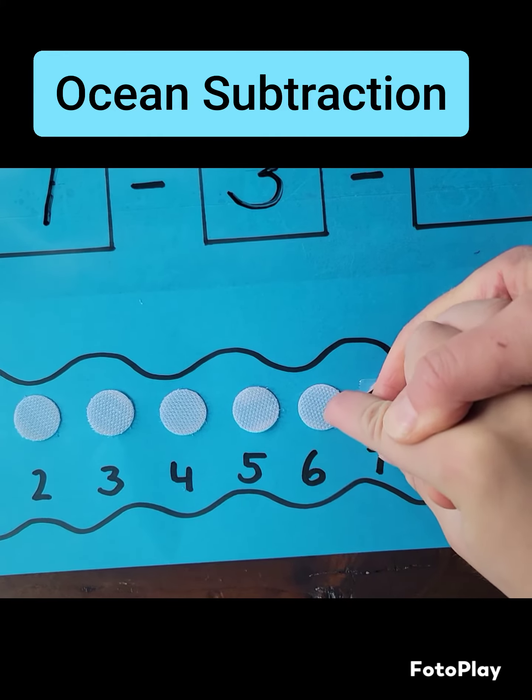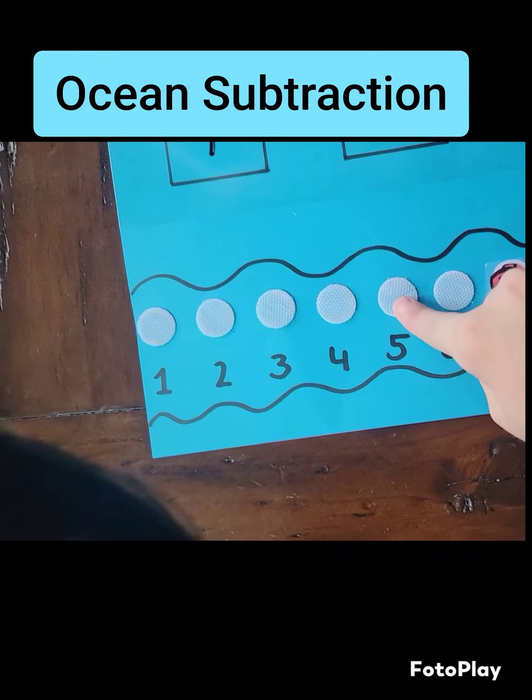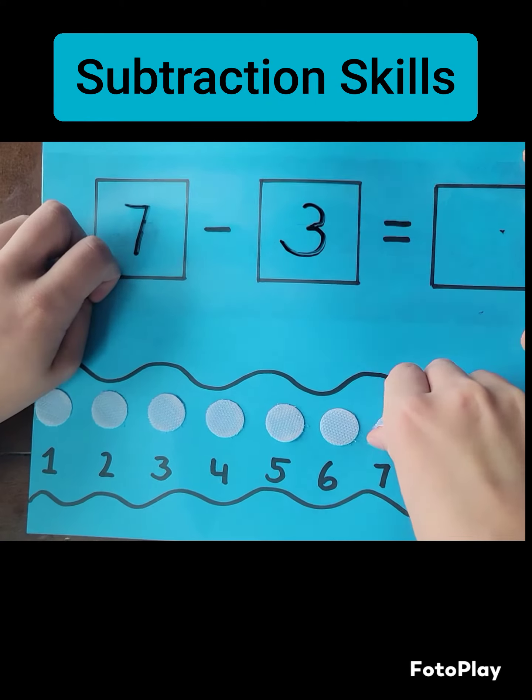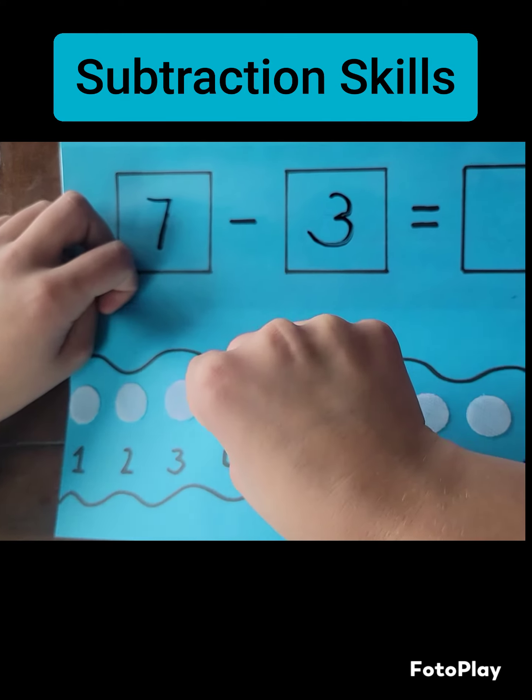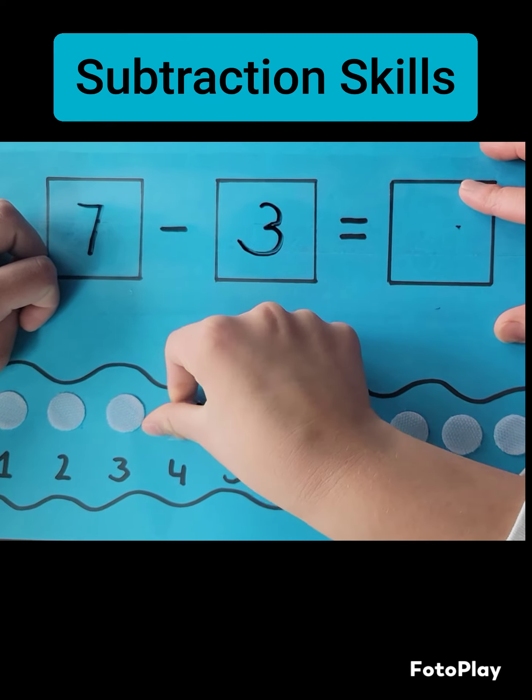Now we have the number three, so we need to touch three velcro tapes: one, two, three. So you land on number four. The fish swims back to number four.